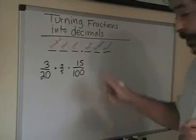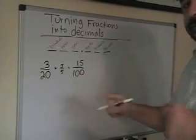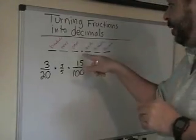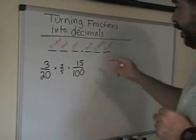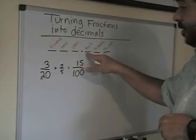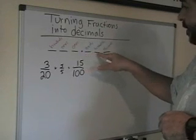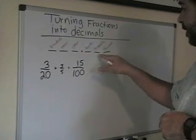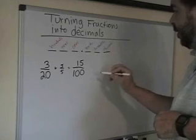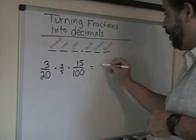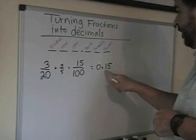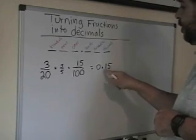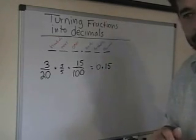Now we have fifteen hundredths. So if you say it properly, you should be able to figure out how to write it as decimal. Fifteen hundredths. Okay, this first place value after the decimal, that's tenths. This is hundredths. That means that the last number has to be written in there, which will come out to 0.15. Because that's tenths. That's hundredths. Fifteen hundredths.